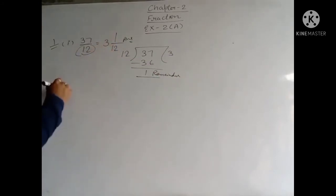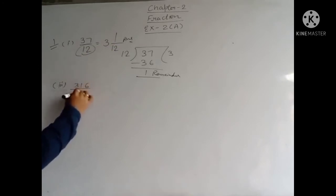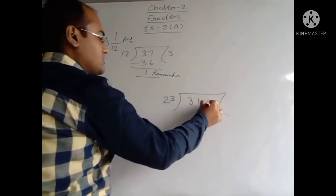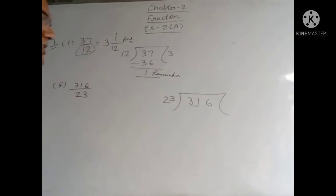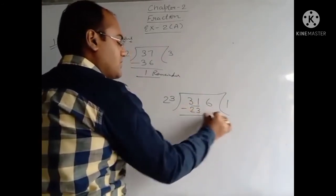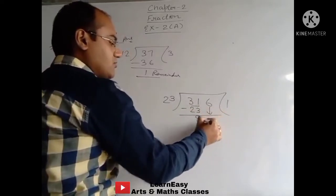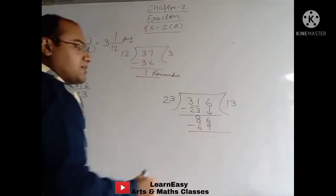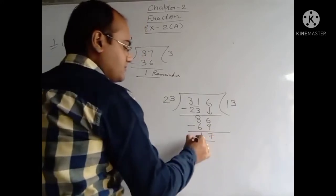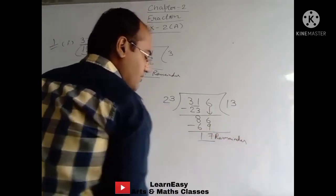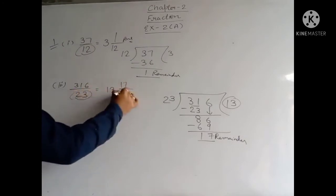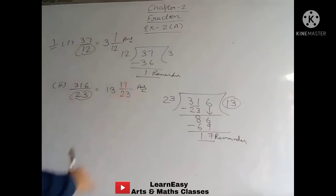Next part: 316 upon 23. First divide 316 by 23. Dividing the first two digits: 31 divided by 23 gives 1, remainder 8. Bring down 6 to get 86. 23 times 3 is 69. On subtracting, remainder is 17. So the quotient is 13. We write 13 as the whole number, remainder 17 on top, and 23 as the denominator. Final answer: 13 whole 17 upon 23.